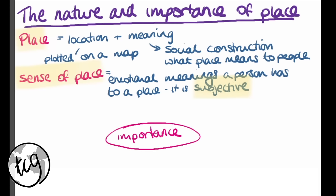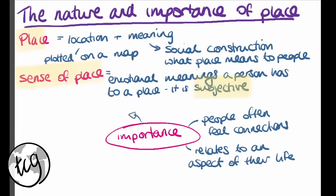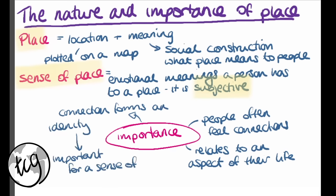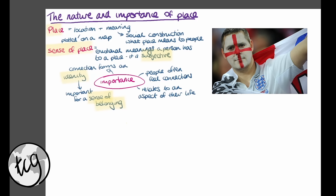When we talk about the importance of place to human life, there are many reasons why places are important. Often people feel connections to places because they live there or it relates to a certain aspect of their life. This connection helps people to form an identity, which is important to human life. It can help you have a feeling of belonging — the idea that you feel like you're a part of that place. This can be seen at different scales: someone might feel belonging to a country, for example feeling proud to support England in the World Cup, or it could be on a much smaller local scale.